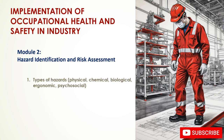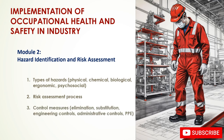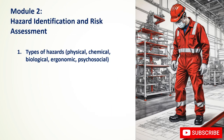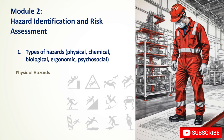Module 2: Hazard Identification and Risk Assessment. Types of hazards include physical, chemical, biological, ergonomic, and psychosocial. The risk assessment process and control measures — elimination, substitution, engineering controls, administrative controls, and PPE — are also covered.